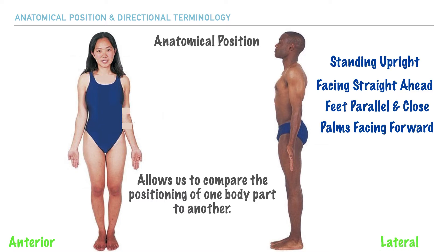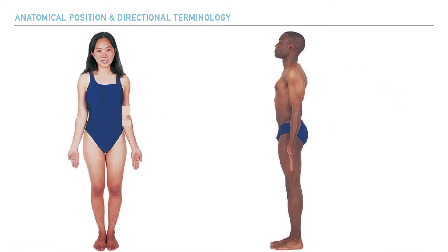Now let's clear the board and discuss why this is the reference point for us to refer to in all things anatomy. When we refer to anatomical position, we're essentially referring to everything from the patient's perspective. For example, if we wanted to refer to the young lady's right leg, we might be tempted to point here because it represents our right if we're looking at her directly.